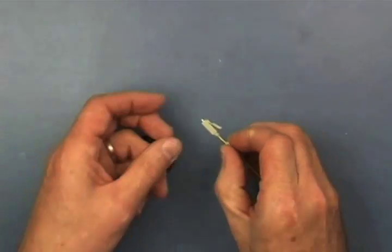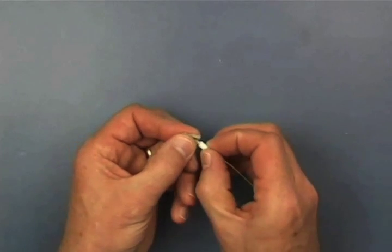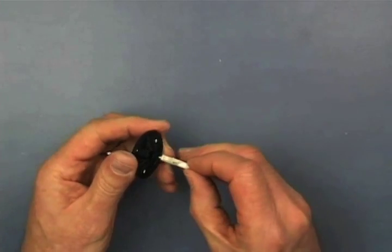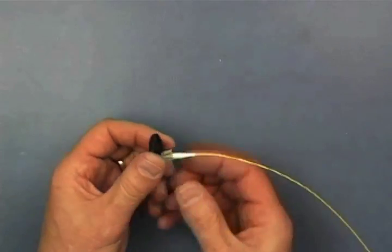Carefully push and seat the buffer support onto the connector body. Insert the connector into the polishing tool, taking care not to touch the tool with the connector tip.